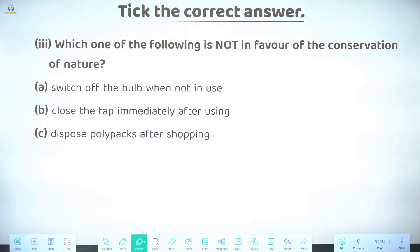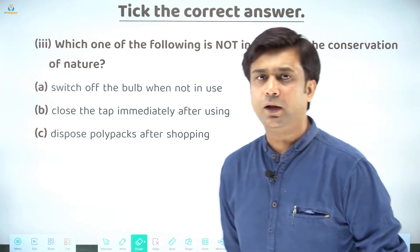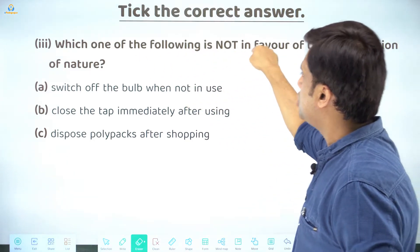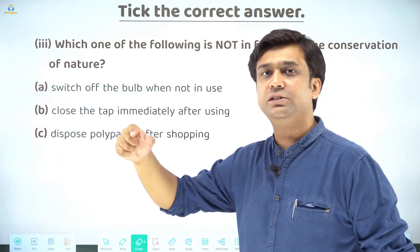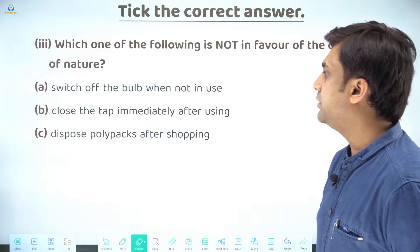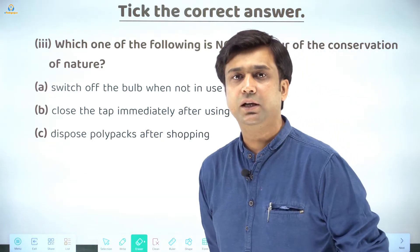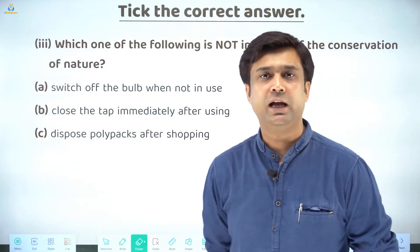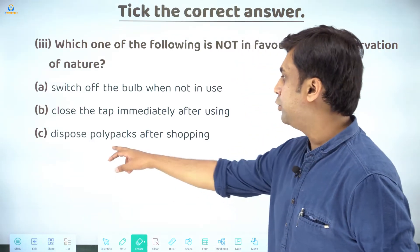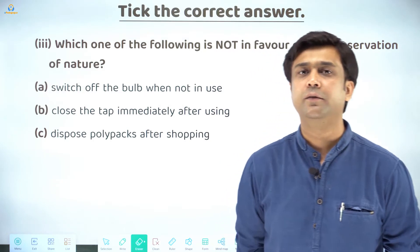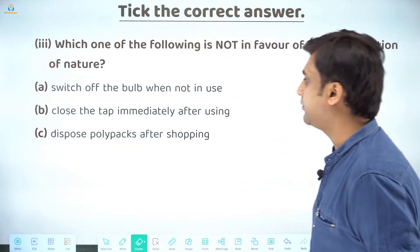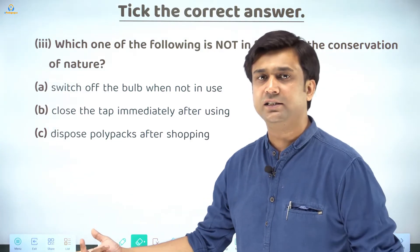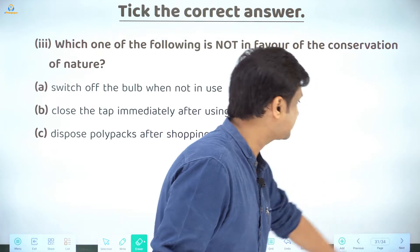MCQ: Which one of the following is NOT in favor of conservation of nature? Be careful — the word 'not' is very important. Options: switch off the bulb when not in use; close the tap immediately after using; dispose poly bags after shopping. 'Dispose poly bags after shopping' means getting rid of them — this does not conserve nature. So this is your answer: dispose poly bags after shopping.